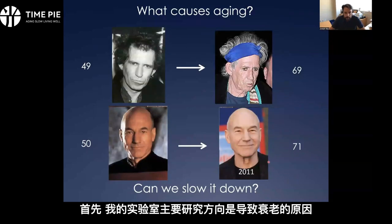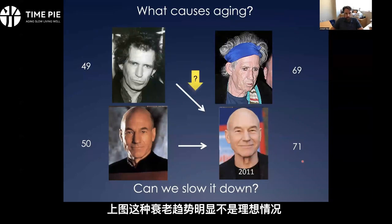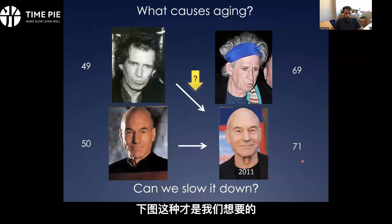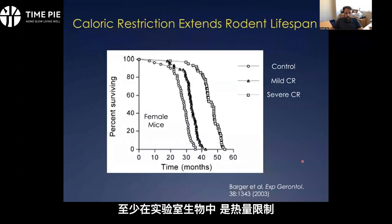To get started, this is the general interest of my lab, which is what causes aging and whether there's anything we can do to slow it down — to take someone with a less successful aging trajectory and redirect them to a more successful aging trajectory. The best way that we know how to do that right now, at least experimentally in laboratory organisms, is caloric restriction.